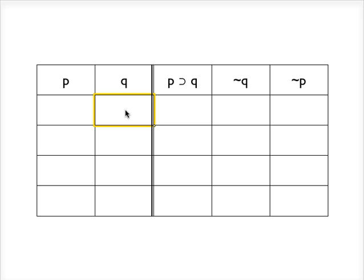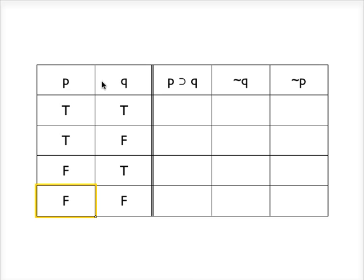We're going to do that following this pattern: true, false, true, false, true, true, false, false. These are the reference columns I've just set up, and the importance of the reference columns is that it captures every possibility of truth values that P and Q could have.